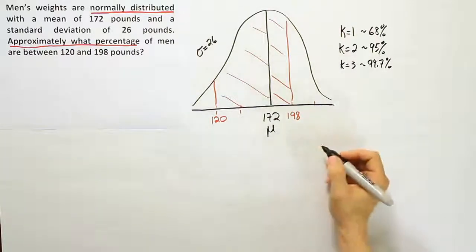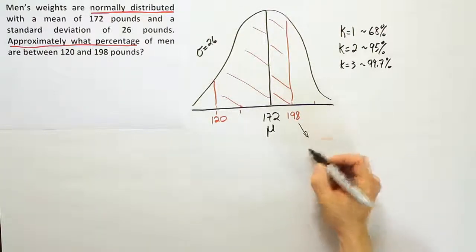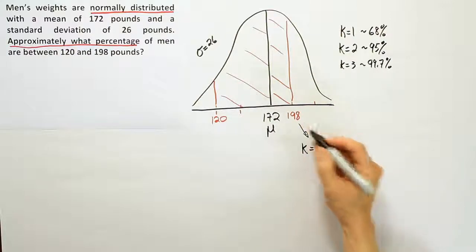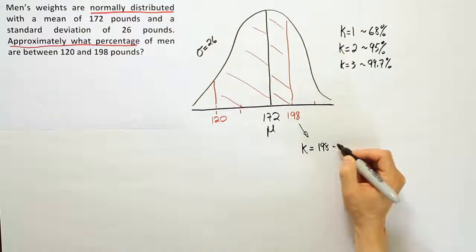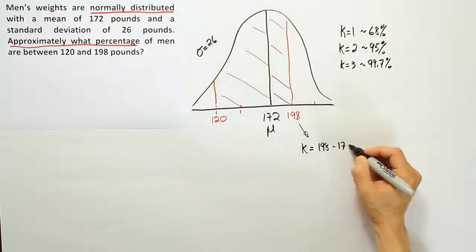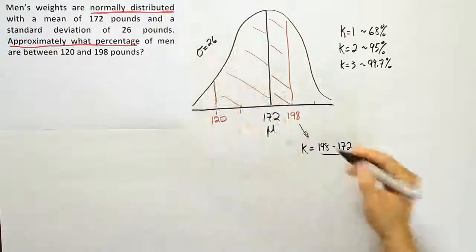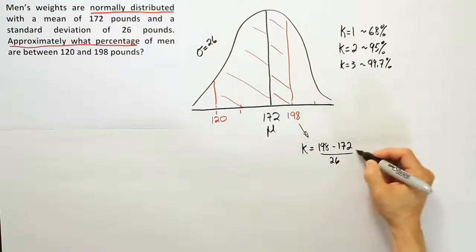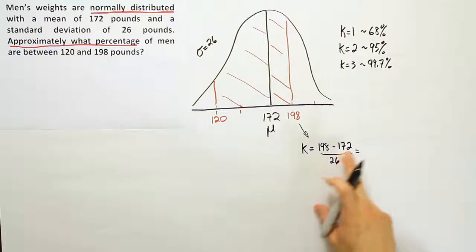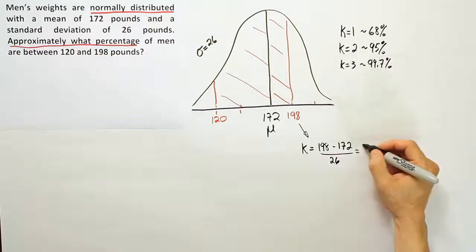We put 198 first, then subtract off the mean which is 172, and then divide by that standard deviation they gave us which is 26. When I do 198 minus 172, I come up with a difference of 26.